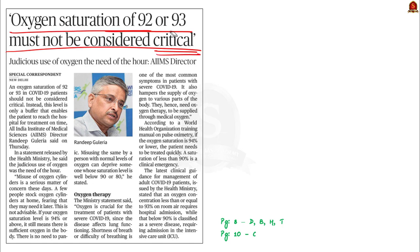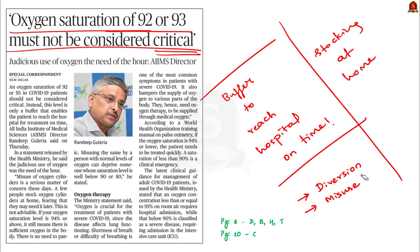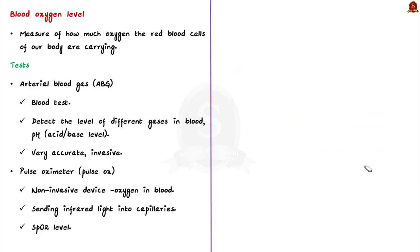This level should only be considered as a buffer that enables the patient to reach the hospital for treatment on time. This statement was issued because people are panicking and stocking up oxygen cylinders at home — even if their oxygen level dips slightly to 94 or 93 they are using these stocked cylinders. This is dangerous because it deprives oxygen to patients who actually need it, where their oxygen saturation is critically low. This is why the ministry issued this statement.